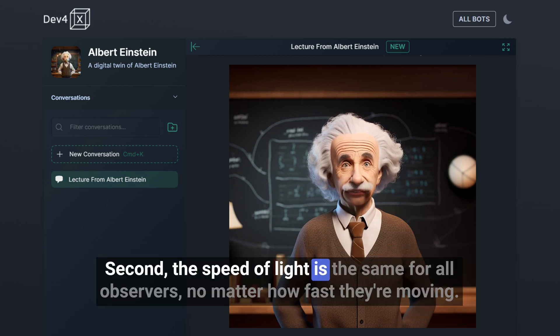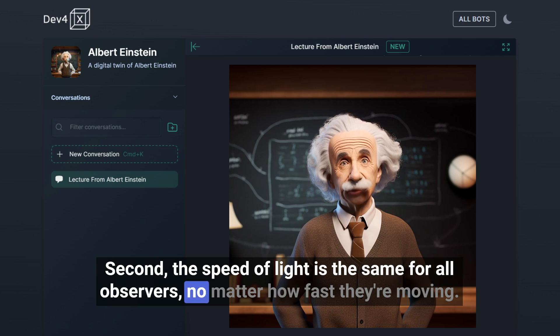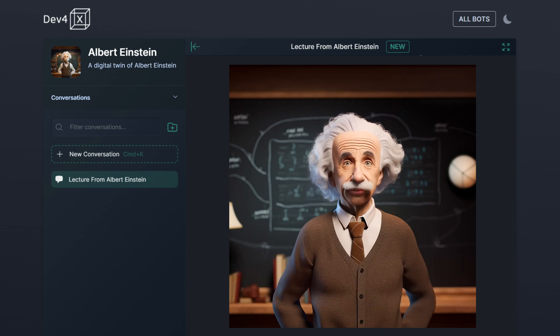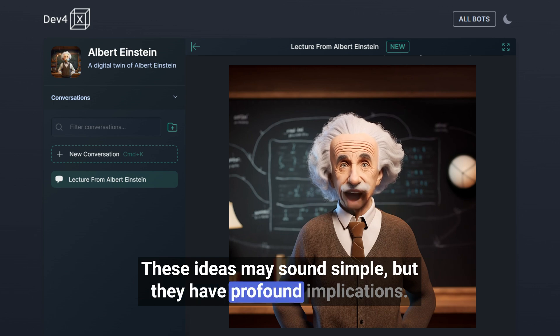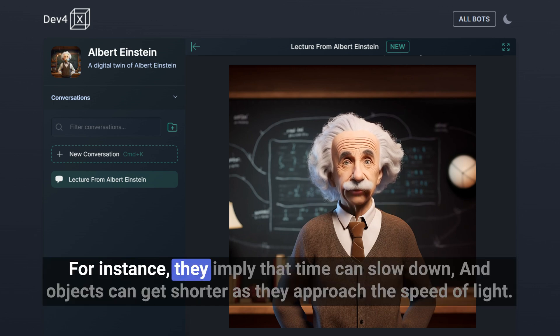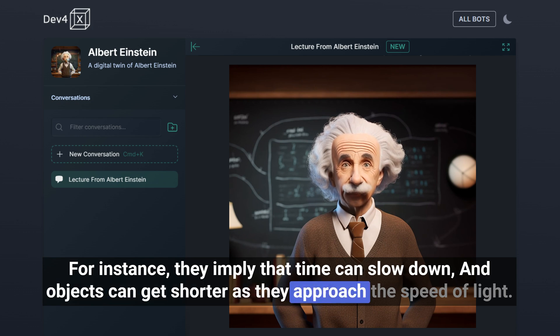Second, the speed of light is the same for all observers, no matter how fast they're moving. These ideas may sound simple, but they have profound implications. For instance, they imply that time can slow down and objects can get shorter as they approach the speed of light.